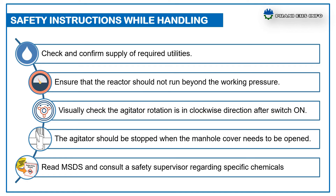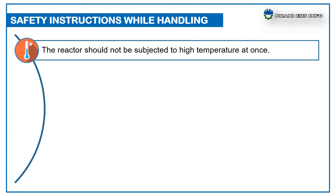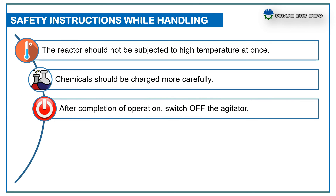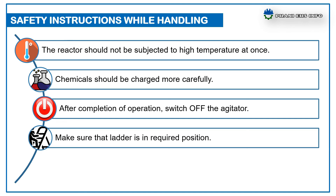Apply chemical safety rules when handling or working with hazardous chemicals. Read the MSDS and consult a safety supervisor regarding specific chemicals. The reactor should not be subjected to high temperature at once — temperature should be raised slowly. Chemicals should be charged carefully depending on the concentration of the chemical reaction. After completion of operation, switch off the agitator. Use a good ladder to reach height levels and ensure the ladder is in the required position with no possibility of displacement or collapse.